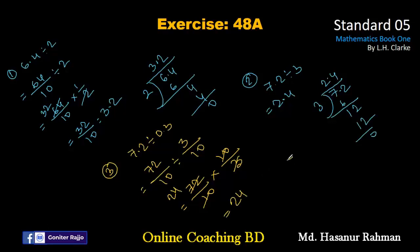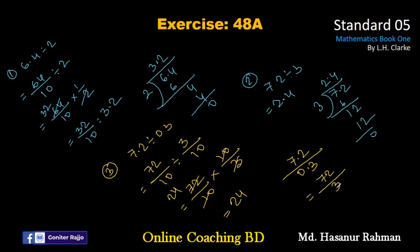Another way is: if we write 7.2 divided by 0.3 and we want to move the decimal point one digit to the right at the numerator, we have to also move it at the denominator. So we can write 72 by 3, and 72 divided by 3 is 24. This is a very easy way to solve this problem.